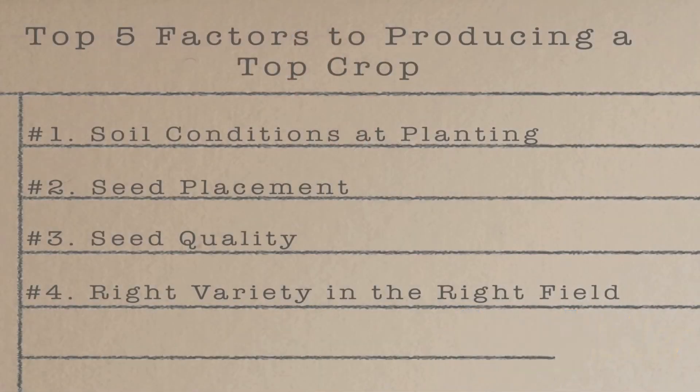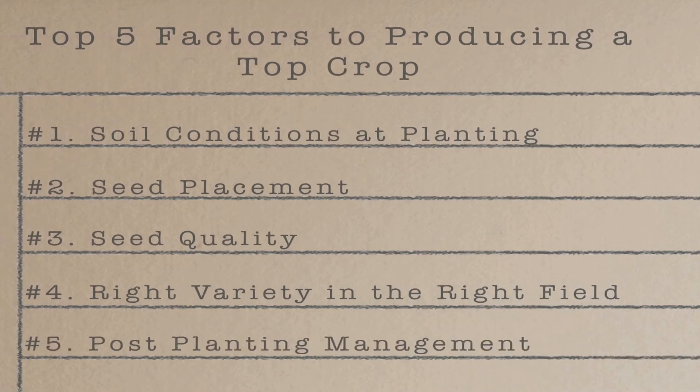And the number five factor to produce a top crop is post-planting management — what happens after the crop is planted. This is critical this year because crops are in all kinds of stages throughout the country. What are we doing now on a daily basis to monitor that crop and nurture it to maximum yield in the fall? Remember, our goal with these five factors is to minimize the damage from the thousand variables. In later segments we'll show you how each one of these five affects two hundred variables, adding up to more than a thousand.